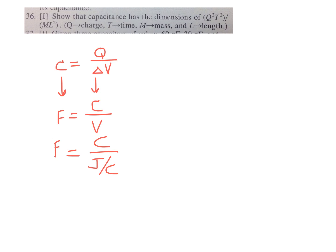All right, so now, if I simplify that, a coulomb divided by a joule per coulomb is a coulomb squared over a joule. All right, it's a coulomb squared over a joule.